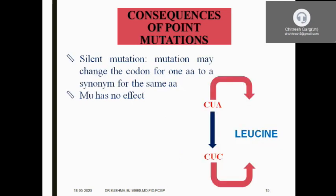Let us look at silent mutation with an example. Mutation may change the codon but still code for the same amino acid due to the degeneracy of the genetic code. Normally, the codon CUA codes for leucine. When adenine is replaced by cytosine — a transversion — we get CUC, which still codes for leucine. Because leucine is coded by both CUA and CUC, there is no problem for the patient. This is called silent mutation.